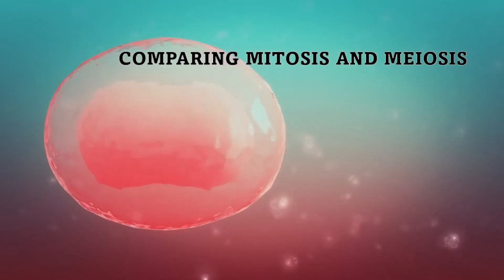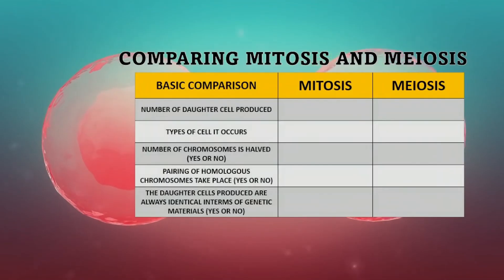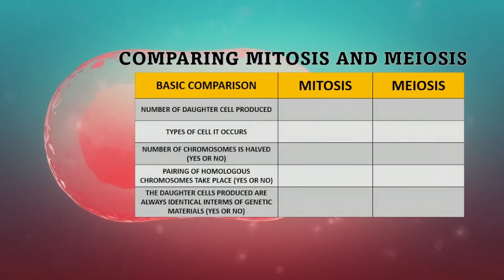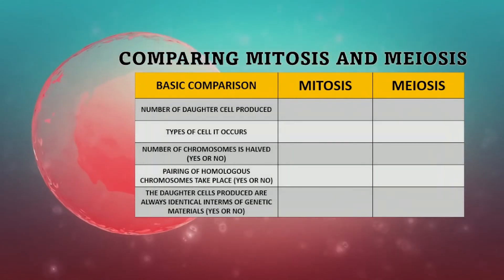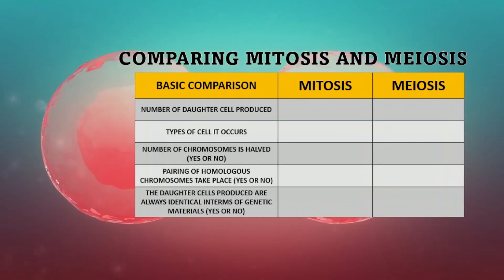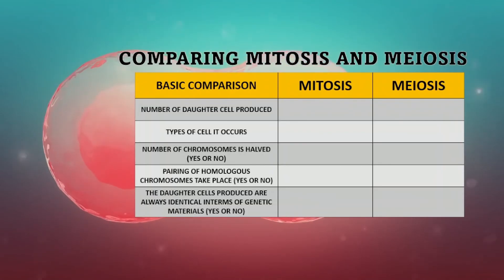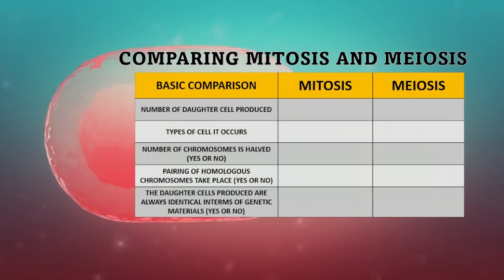Comparing mitosis and meiosis. Using a table of basic comparison between mitosis and meiosis: number one is the number of daughter cells produced; number two, the types of cells in which it occurs; number three, whether the number of chromosomes is halved; and whether the pairing of homologous chromosomes takes place.